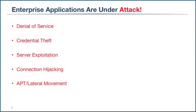As we all know, enterprise applications are under attack and here are the five big ones. I've listed them in order of occurrence, though each one is extremely lethal to the enterprise. Denial of service is actually the oldest form of attack and it's still with us today. Next we have credential theft — that's when you steal the name and password of a user via phishing attack, or root the machine and take their Active Directory hash or multi-factor token.